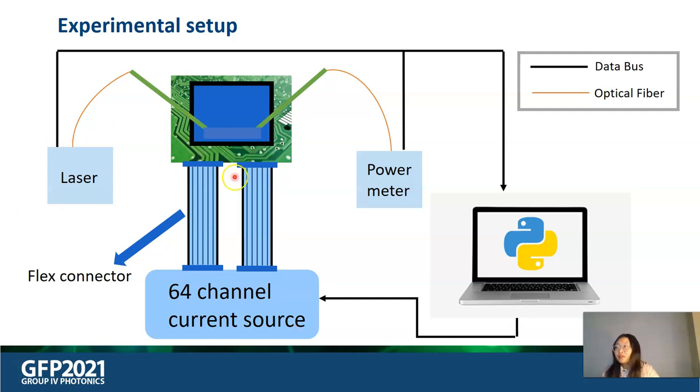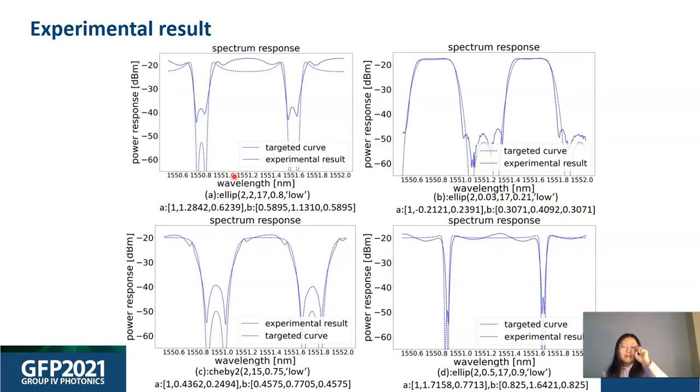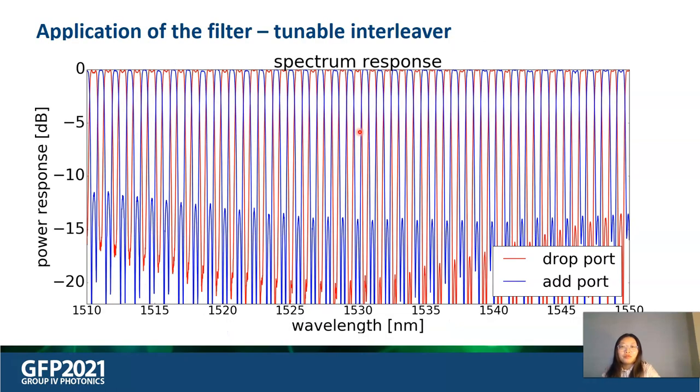The measurement result is shown as following. We demonstrated that we could configure our circuit to different kinds of filters and we could see a quantitative match between the ideal response and the measurement result. We are also interested in applications such as optical interleavers. Here is our initial experiment result for optical interleavers. The center frequency shifts from 1550 to 1530 nanometer. The cause of it might be the central operation wavelength shift of the directional coupler.